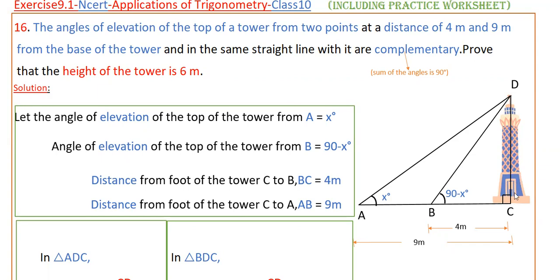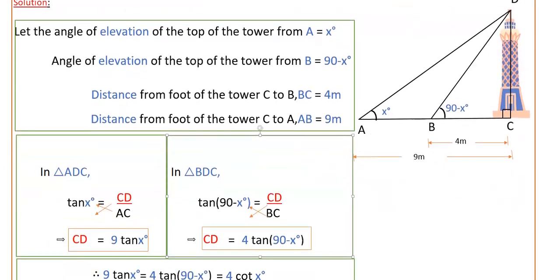So here CD is a common side for these two triangles. You can see here there are two right triangles. So CD is common for these two right triangles. So take these two triangles here. First in triangle ADC.